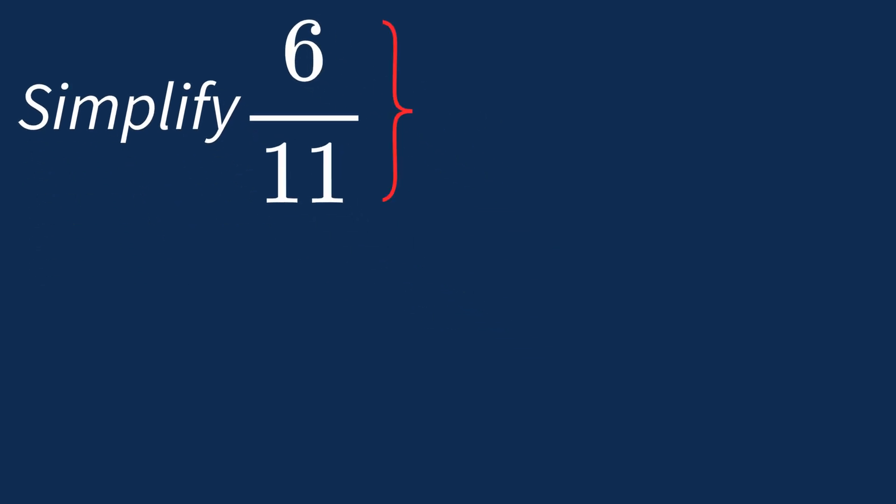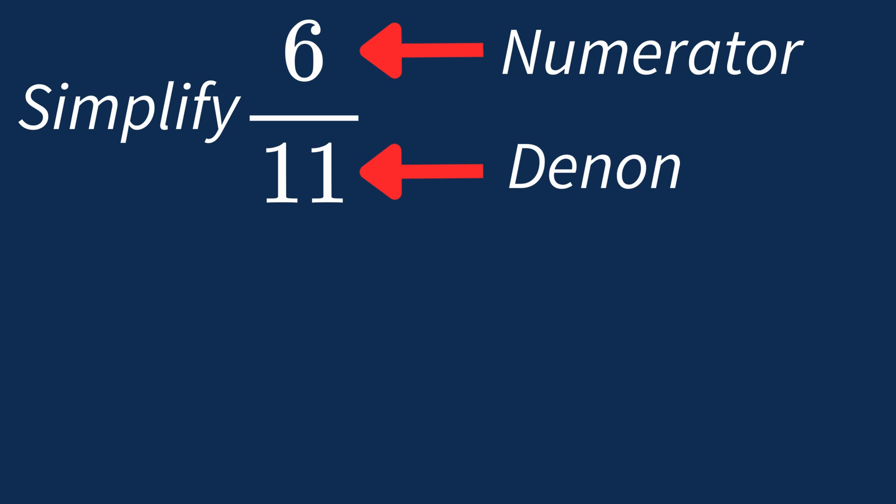When simplifying a fraction like 6 over 11, the first step is to check if there's a common factor between the top number, the numerator, and the bottom number, the denominator.